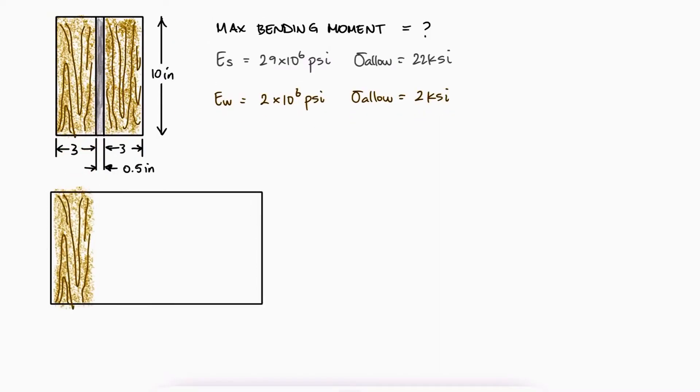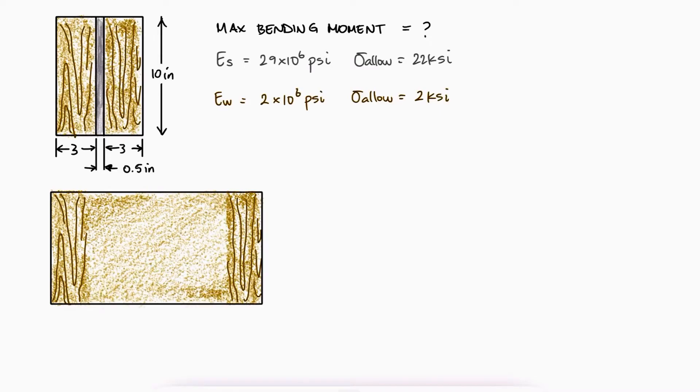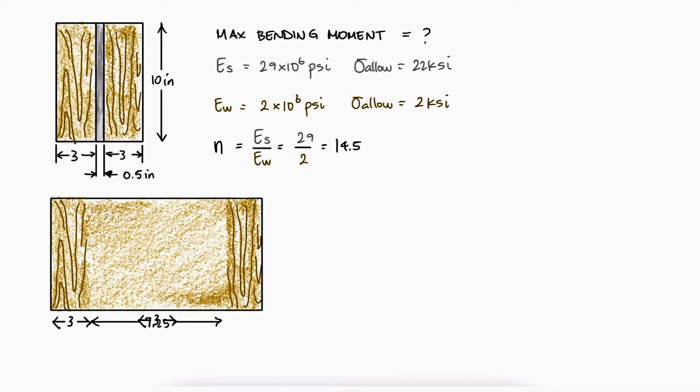Just like we did with the previous example, we'll transform the steel into wood. With the elastic moduli ratio, we see that the dimension that used to be 0.5 is now 0.5 times 14.5, which if added to the existing 3 inches on both sides adds up to 13.25.